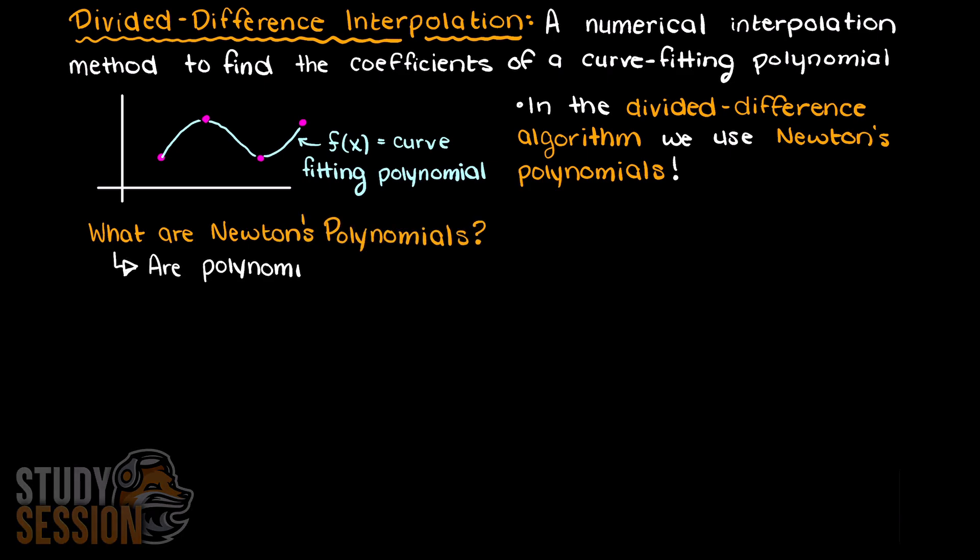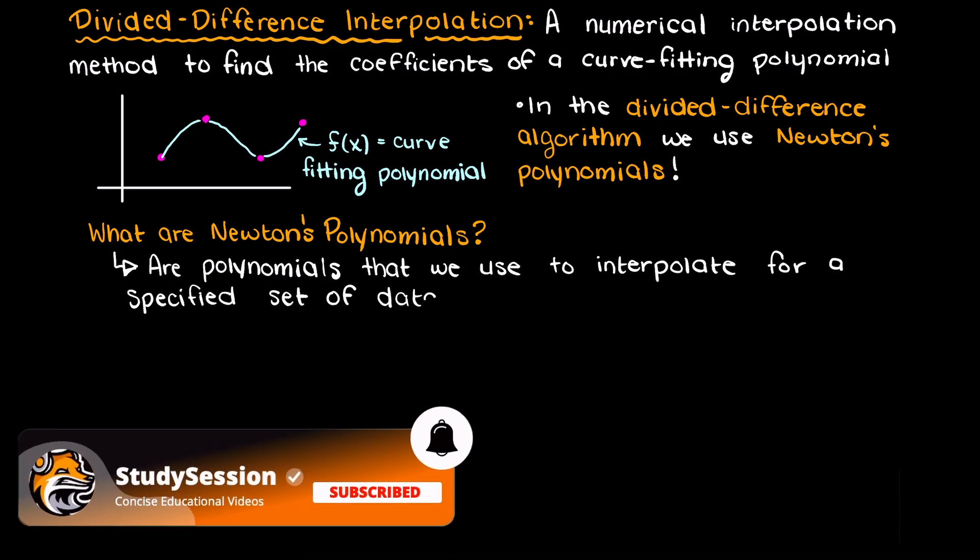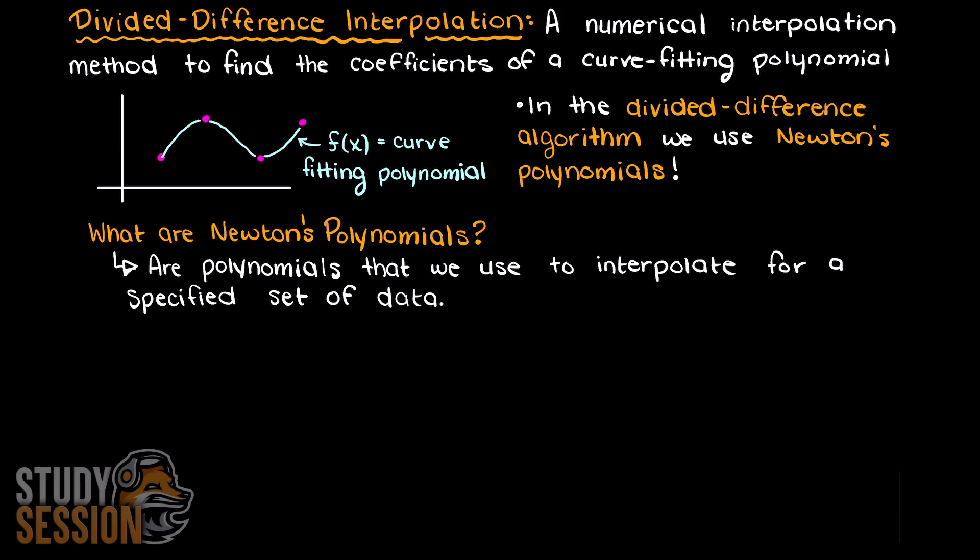Newton's polynomials are just polynomials used to interpolate discrete data points from a given data set. But you may ask, we have learned about Lagrange polynomials, why can't we just use those?